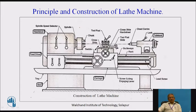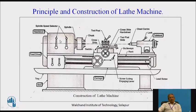The work-holding device — a chuck — is mounted on the spindle. When the motor starts, the spindle rotates. The RPM is selected using gear-train lever selectors inside the headstock. By shifting the levers, different gear trains mesh and the spindle speed changes. The spindle speed depends on the diameter of the workpiece, the material to be removed, required surface finish, and the type of material and tool.